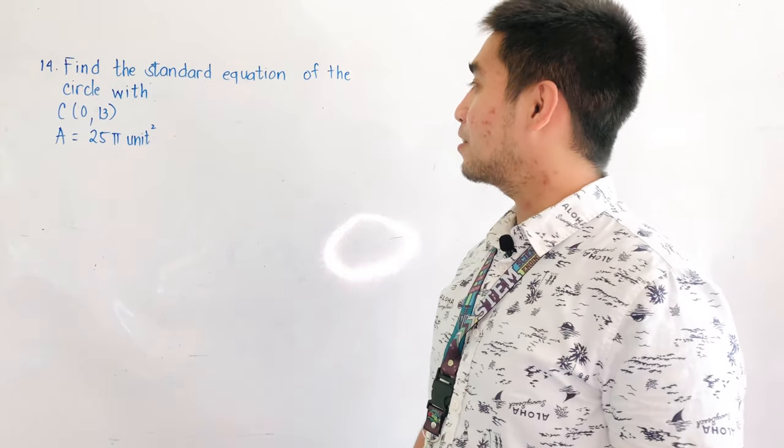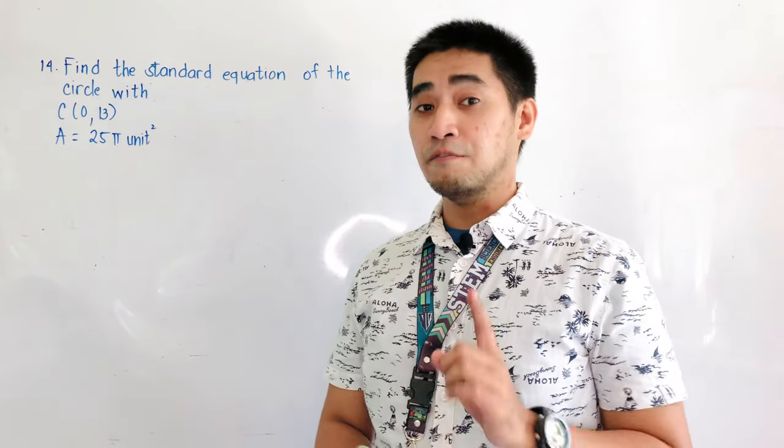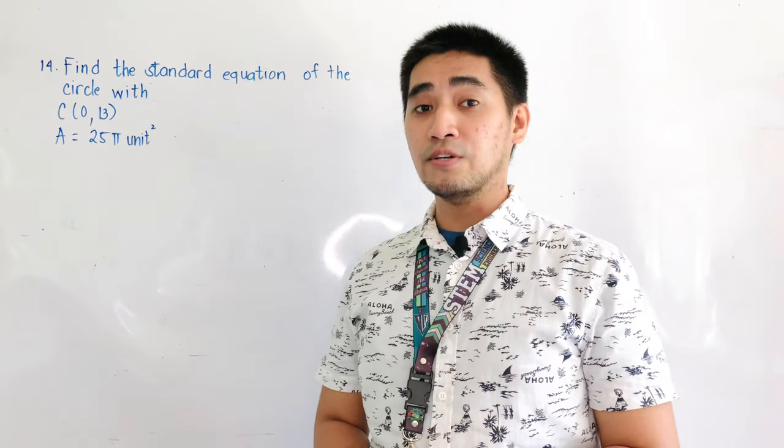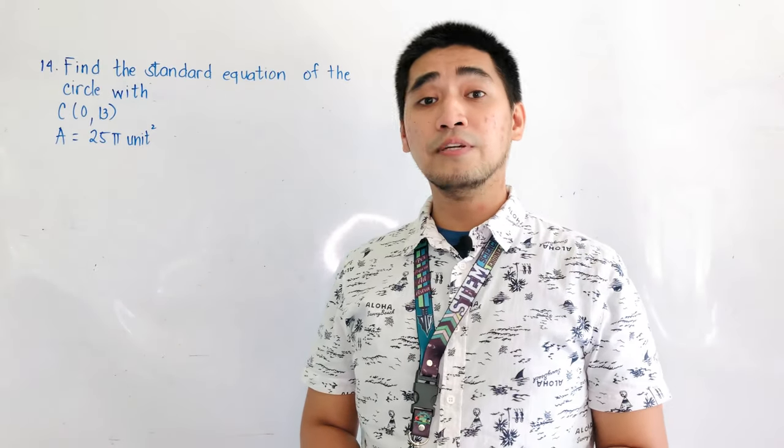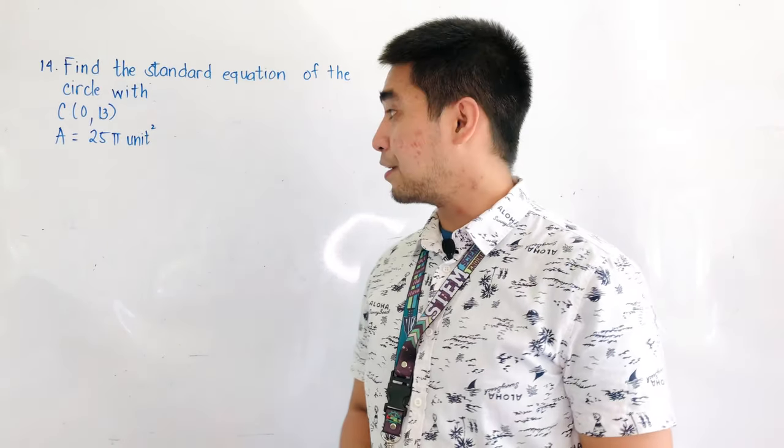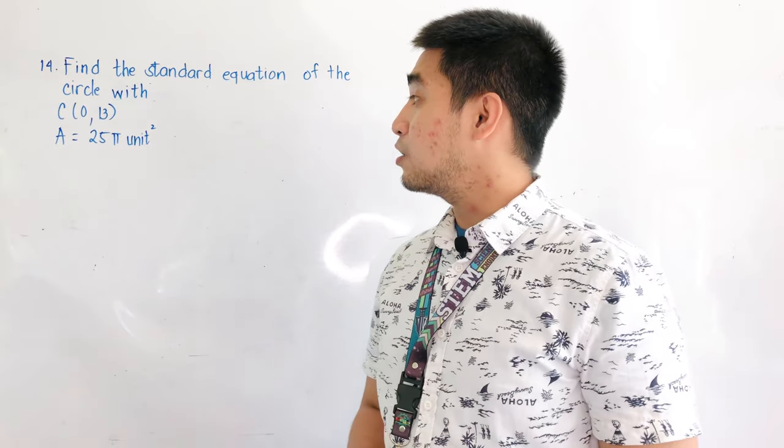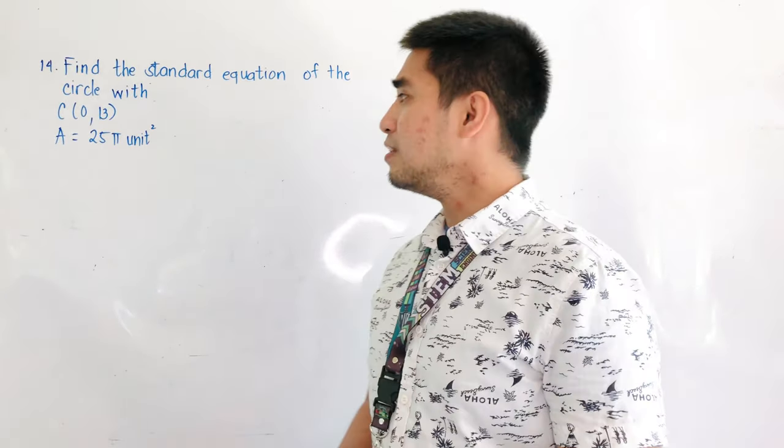we have to find the standard equation of the circle. The first condition is that the center is located at 0 and positive 13. And we're given another condition that the area is equal to 25 pi units squared.